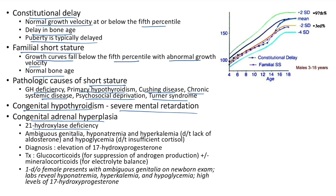Congenital adrenal hyperplasia: due to 21-hydroxylase deficiency. Clinical features include ambiguous genitalia, hyponatremia and hyperkalemia (lack of aldosterone), and hypoglycemia (lack of cortisol). Diagnosed by elevated levels of 17-hydroxyprogesterone. Treatment: glucocorticoids for androgen suppression and mineralocorticoids for electrolyte imbalance. Case: 1-day-old female with ambiguous genitalia, hyponatremia, hyperkalemia, hypoglycemia, and high 17-hydroxyprogesterone.